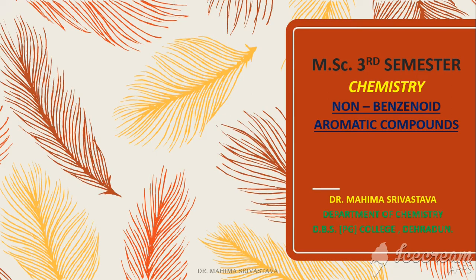As last time we had studied monocyclic ionic systems and we studied cyclopropenyl cation, in continuation with it we shall today study cycloheptatriene cation. Let's get started with it.